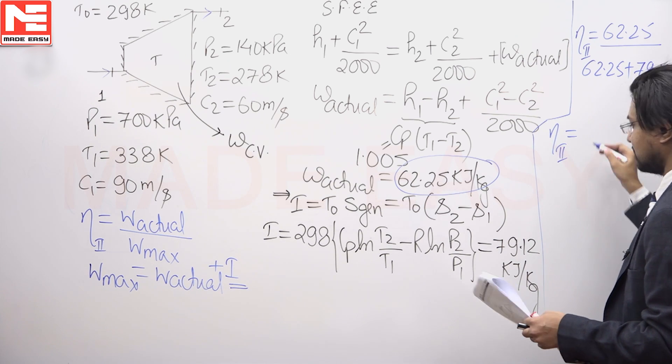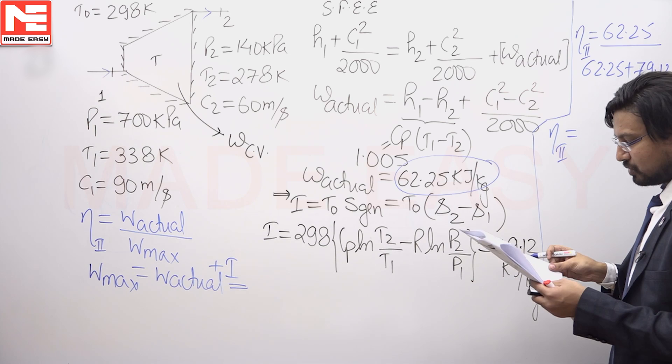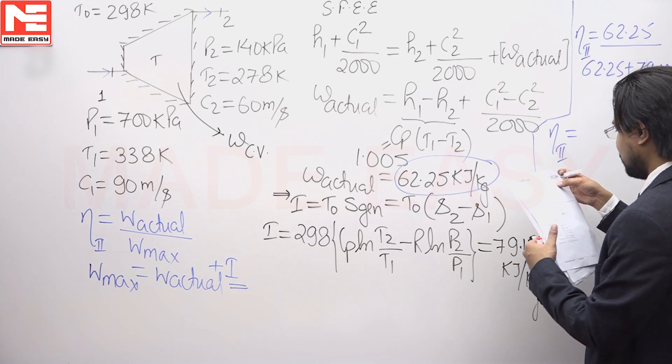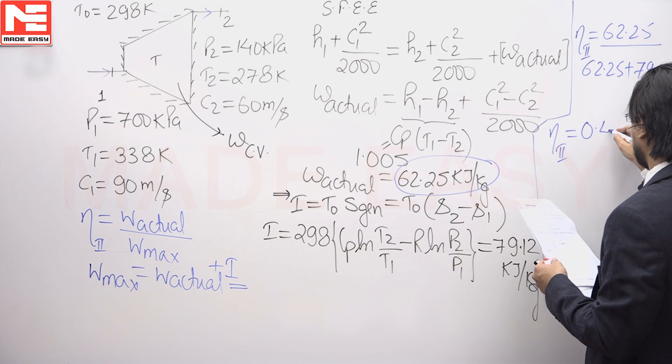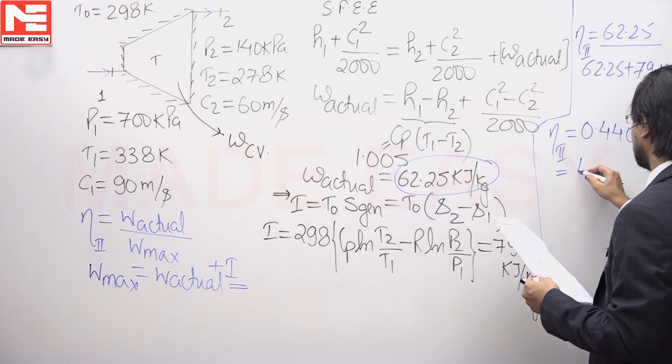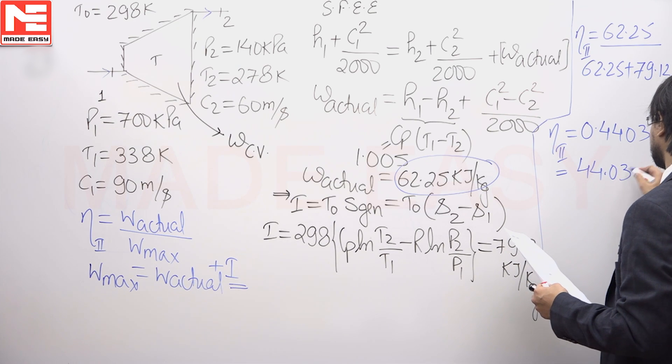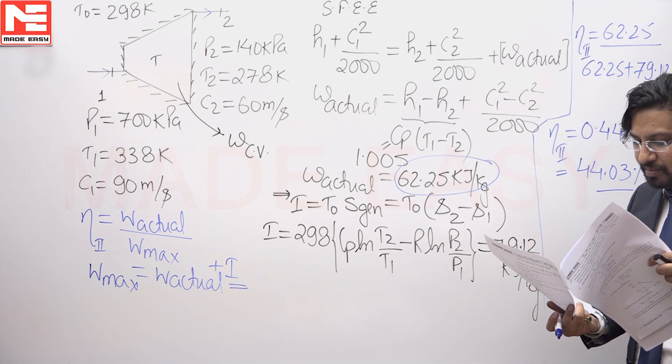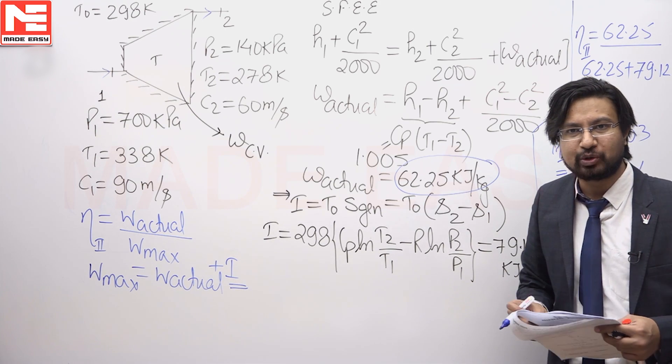We will get the second law efficiency equal to 0.4403, that is equal to 44.03 percent. In this problem the value comes out to be 44.03 percent.